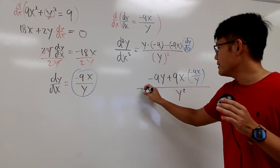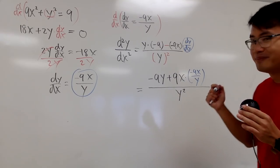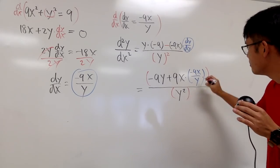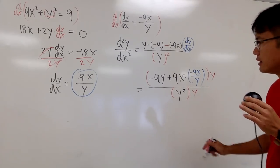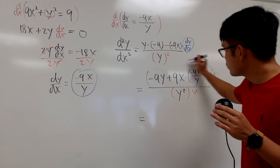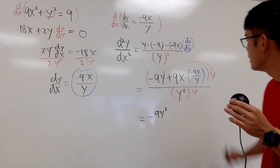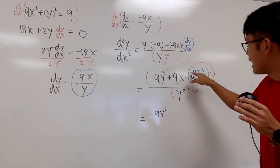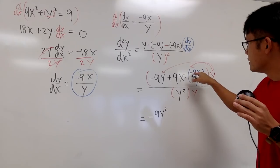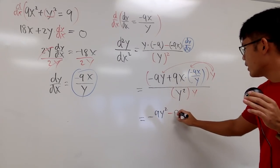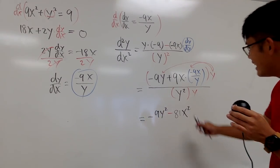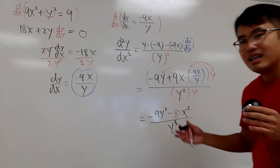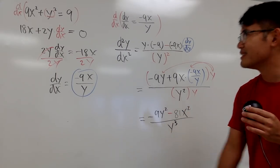We have a complex fraction because of the y in the numerator term. So multiply both top and bottom by y. Multiplying gives negative 9y squared, and the y's cancel in the other term leaving 9x times negative 9x, which is negative 81x squared. The denominator becomes y squared times y, which is y to the third power.